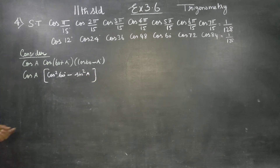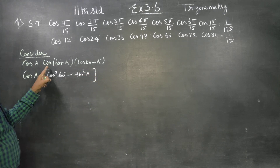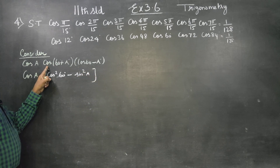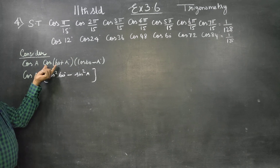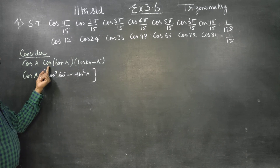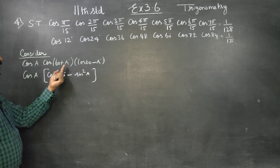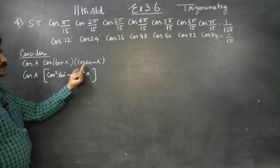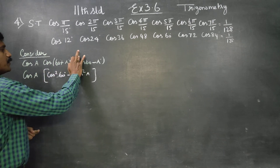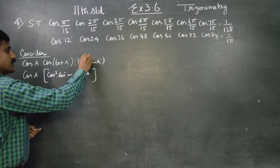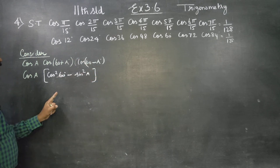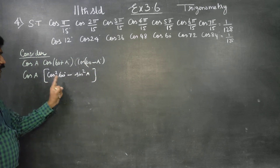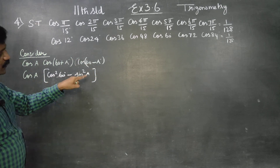This is a ready-made formula for this. Cos(60). Cos(60) is a formula. The formula for cos(a + b) into cos(a − b) is cos²a − sin²b.